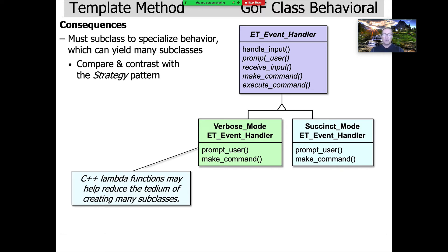One way to get rid of this tedium is to use C++ lambda functions — a common way nowadays to avoid having to make lots of subclasses. You've been seeing examples of this in assignments and class examples when using lambda functions in lieu of making custom functors. You can think of custom functors as basically statically bound template methods — they're really more strategies, but the same idea. You don't actually have to make separate classes; you can just pass in anonymous chunks of C++ behavior in the form of lambda functions, doing the work that would have required defined classes in earlier days of C++.